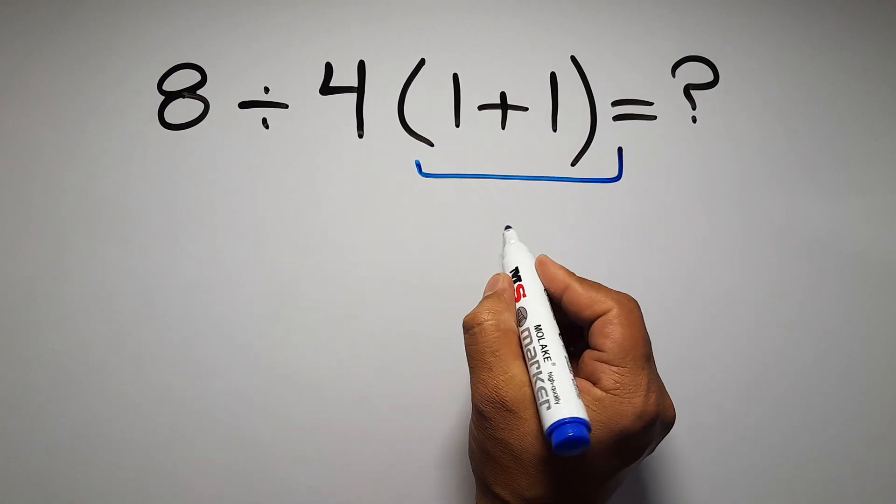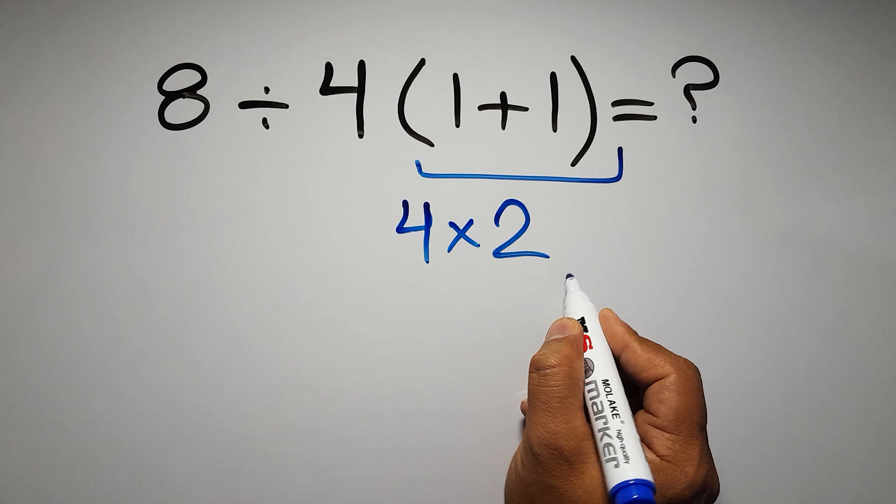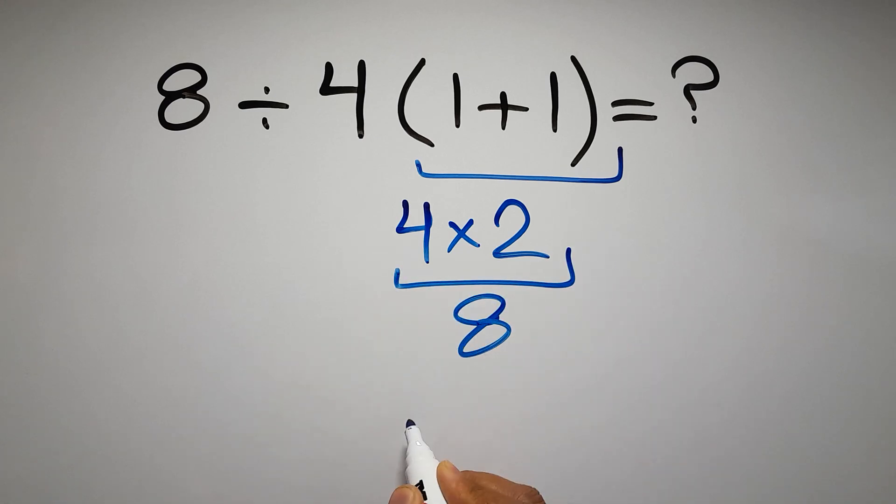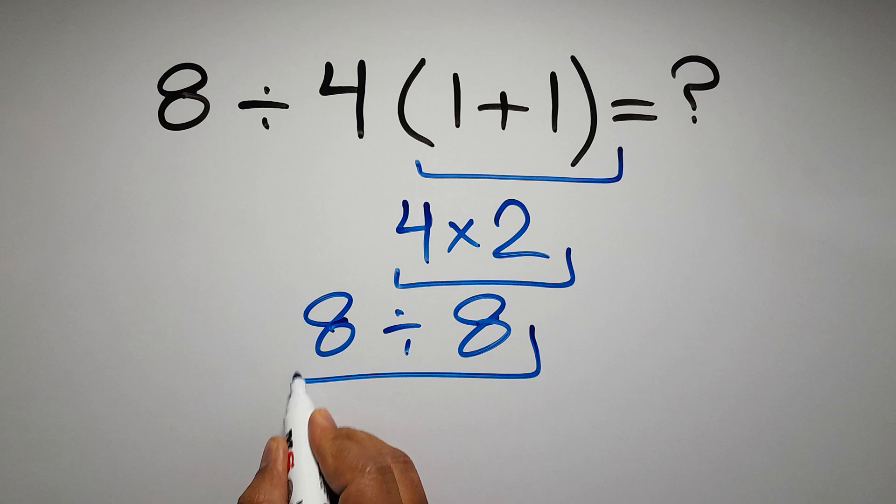1 plus 1 gives us 2, and 4 times 2 gives us 8, so 8 divided by 8 is just 1.